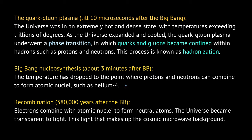Then we had to wait a really long time — 380,000 years — for the electrons to finally form atoms together with our atomic nuclei. The universe became suddenly transparent to light. The light we still see today makes up the cosmic microwave background radiation.